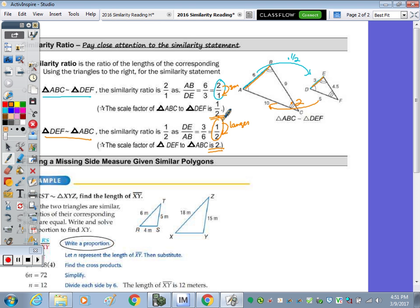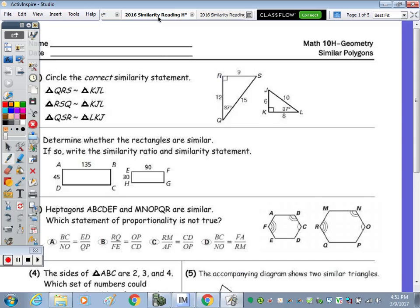So question number one on the reading homework. This is circle the correct similarity statement. Well, we have an angle of 37 here, and that angle of 37 is congruent to Q is congruent to L. So Q and L have to be in the same spot, Q is first, L is not first, it's out. Q is last, L is last, that's good, Q is first, L is first, that is good. You can also take a look at R, but we know that if two angles of a triangle are congruent to two angles of another, these third angles are congruent. So angle S is congruent to J. So S and J have to be in the same spot, S is in the middle, J is in the middle, S is in the middle, J is last, this one's out, so this is the correct statement.